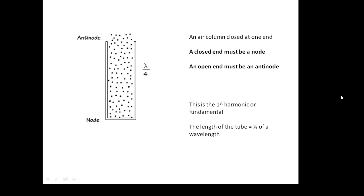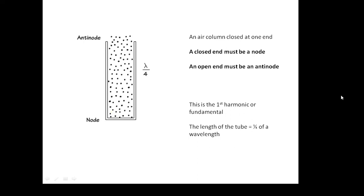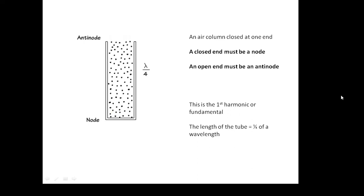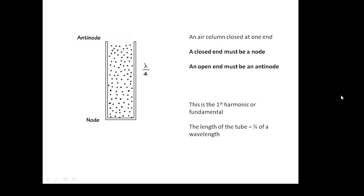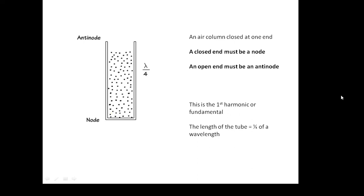There are two types of tube we need to know. The first is a tube closed at one end and open at the other. You must remember that a closed end must be a node, and an open end must be an anti-node. A node is where the particles vibrate very little; an anti-node is where they vibrate a lot. This means the biggest wavelength we can get is when the length of the tube equals a quarter of a wavelength, or the wavelength is four times the length of the tube. This gives our lowest frequency — our first harmonic, our fundamental.